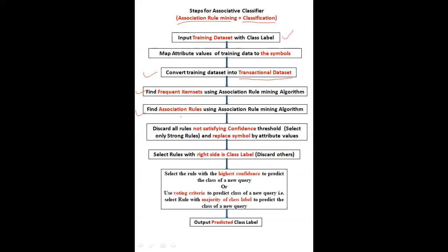After calculating these rules, we discard all the rules not satisfying the confidence threshold — that is, those that are not strong rules, meaning those not satisfying the given threshold confidence value. Only we select the strong rules in this step. After this step, we replace the symbol by the attribute value, because in step two we converted attribute values into symbols. Here you replace the symbol with the attribute values because we want the original rules along with the actual given dataset. After finding the strong rules, you select only the rules that have a class label on the right side.